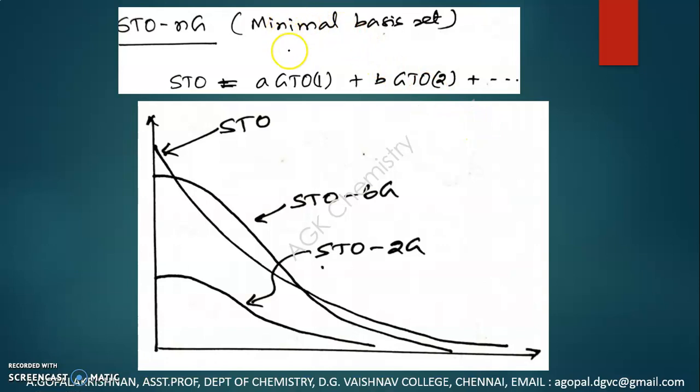Apart from a minimal basis set, we have split valence basis set, we have polarized basis set, and many other basis sets available for the atomic orbital functions. In doing molecular orbital calculations, the choice of basis set is very, very important — it plays a very important role in getting energy close to the experimental energy of the system.